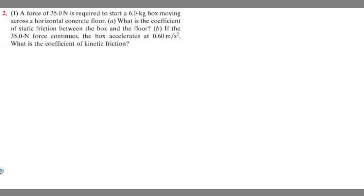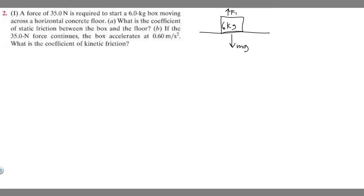Let's go ahead and draw what's going on here. We have this 6 kilogram box on the floor and it's going to be moving. Here's our box on the floor, and let's label the different forces acting on it. We know it's going to have mass times gravity acting on it — its weight force — and since it's touching the ground, it's also going to have a normal force acting up against it, F sub n.